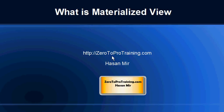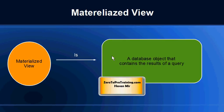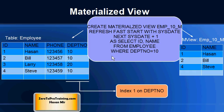In this session we will talk about what is a materialized view. This is Hassan Mir from Zero2ProTraining.com. A materialized view is defined as a database object that contains the results of a query. If you want to gain a performance advantage, then creating a regular view is not going to give you that — you might want to create a materialized view.